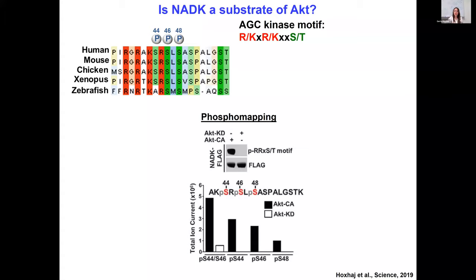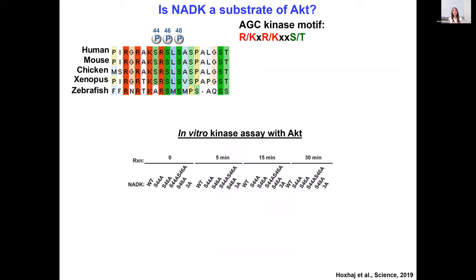To map the phosphorylation sites, we performed phosphomapping by expressing NAD kinase together with catalytically active or kinase-dead AKT, then purified and sent it for mass spectrometry. Mass spectrometry identified three sites: serine-44, serine-46, and serine-48. The two major sites were serine-44 and serine-46. We confirmed this with an in vitro assay purifying NADK wild type and various mutants from E. coli. Within five minutes of incubation with AKT, we see robust phosphorylation. The double mutant serine-44 and serine-46 completely abolishes phosphorylation by AKT, suggesting these two are the two major AKT phosphorylation sites, with serine-48 playing a lesser role.